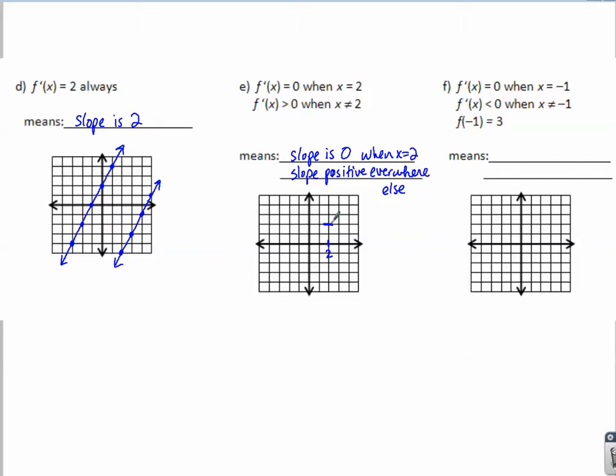But everywhere else, the function has to be increasing, positive slope. So let's increase up to that point. But remember, you don't want any sharp points. So we've got to gradually get to a slope of zero, and then gradually get away from a slope of zero.